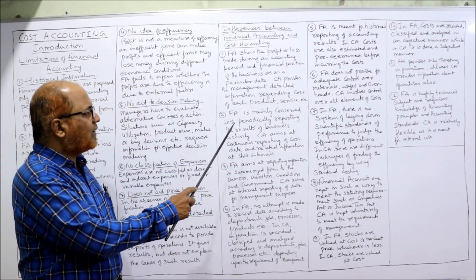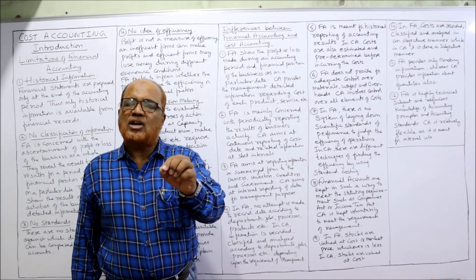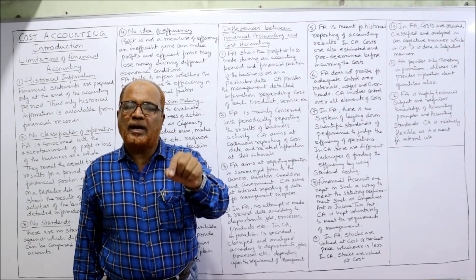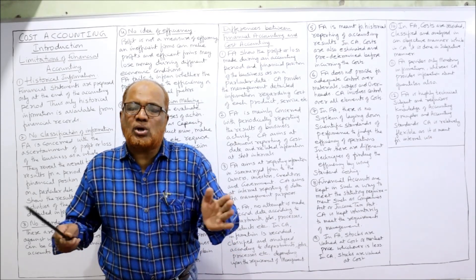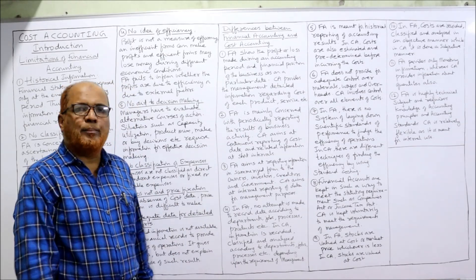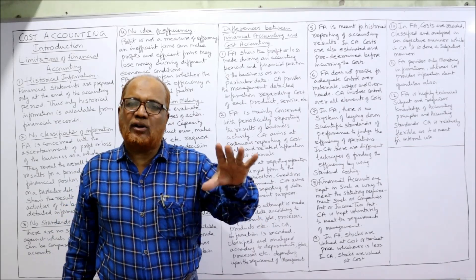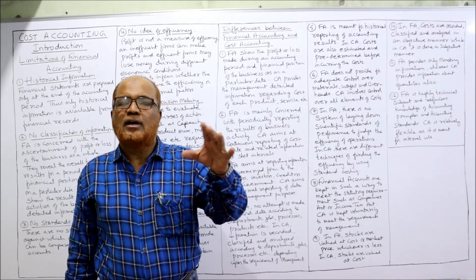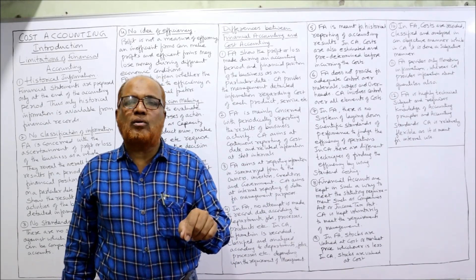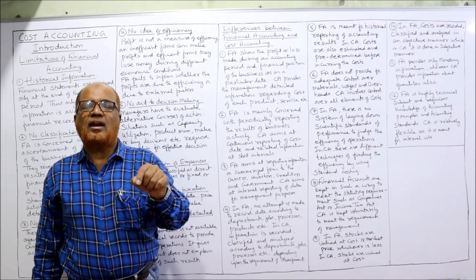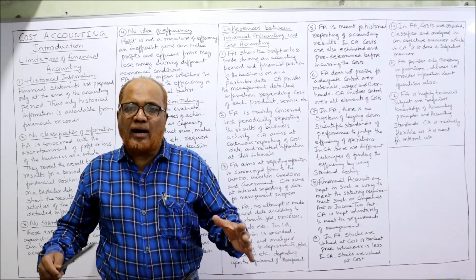Financial accounting mainly consists of periodical reporting — it prepares financial statements only at the end of the year, when all accounts are closed, profit and loss account is prepared to find out profit, and the balance sheet is prepared to find out financial position. In cost accounting, reports have to be prepared as and when required by management, so a large number of reports are prepared and submitted to management.